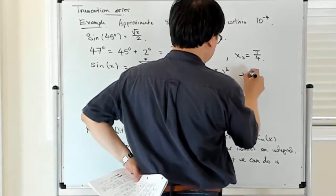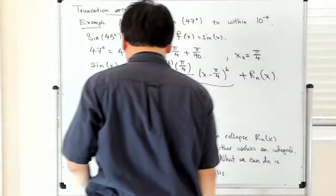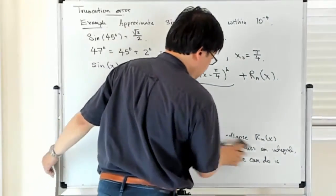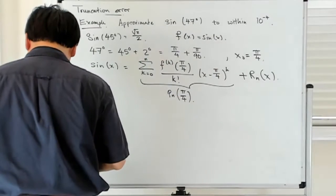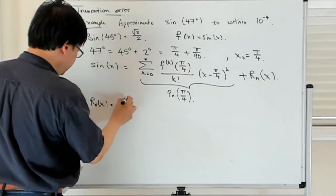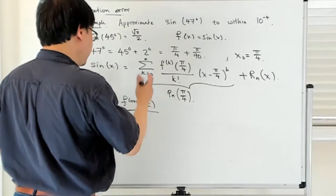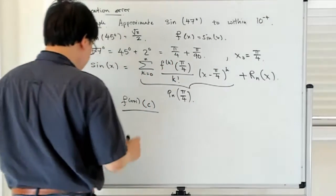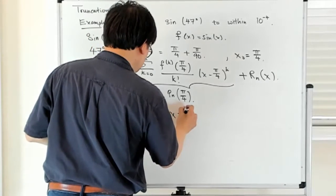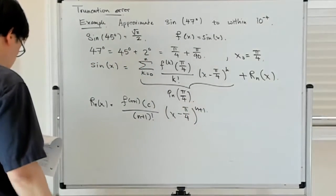Then there's a remainder term, rn of x. So what does rn of x look like? We know that rn of x looks like the n plus first derivative at some unknown point c of f, which is sine, divided by n plus 1 factorial, and then there's x minus π over 4 to the n plus first power. So how many terms do we need?